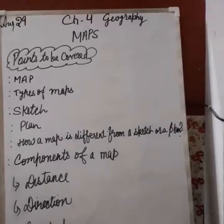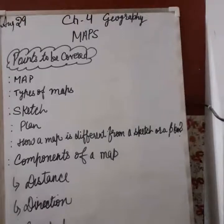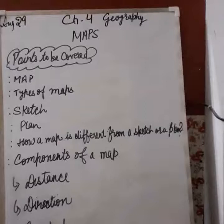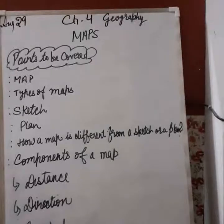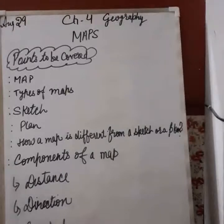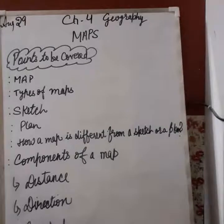Next is direction. Whenever we draw a map, we must know which direction it points to — that needs to be clearly understood. Most maps contain an arrow mark with the letter N at the upper right-hand corner to show the north direction. This arrow is called the north sign. When we know the north, we can find out the other directions very well, because there are four major directions: north, south, east and west. These are called cardinal points.